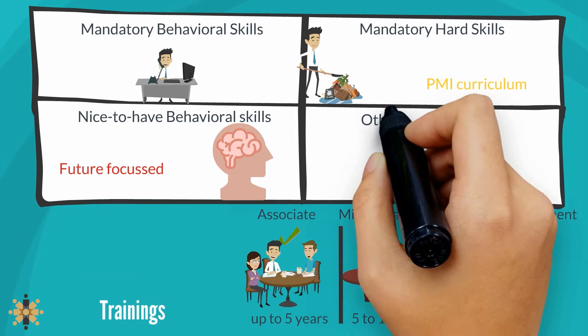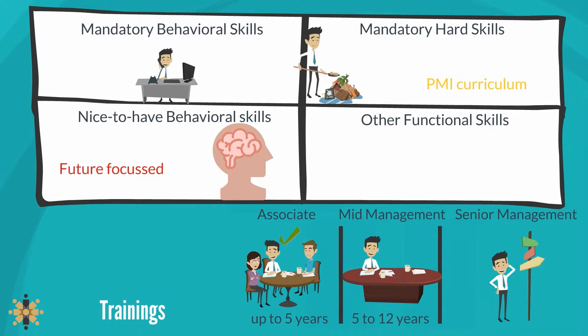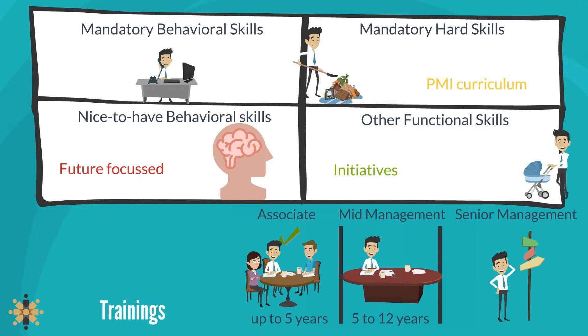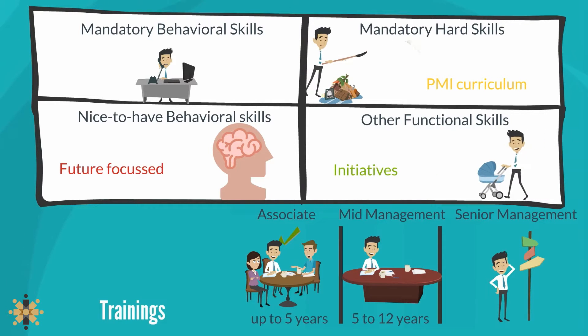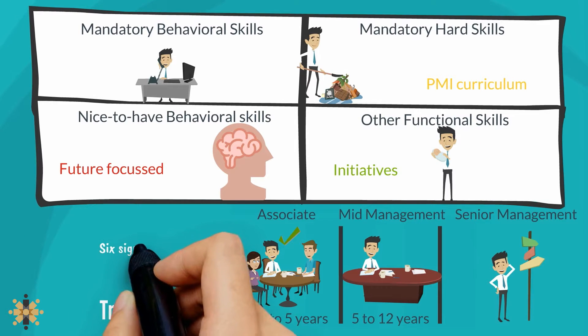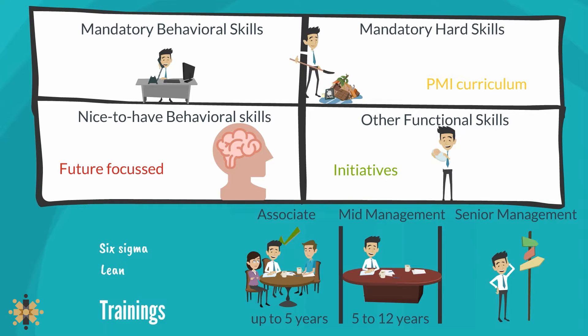Set 4 comprises other functional skills. These skills are from initiatives that may be required across the organisation, like Six Sigma, Lean, etc.